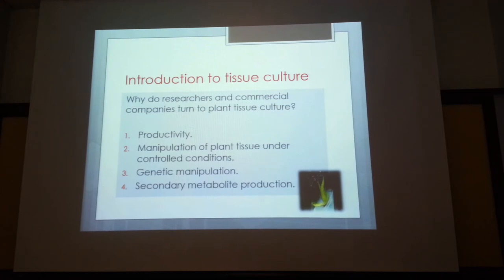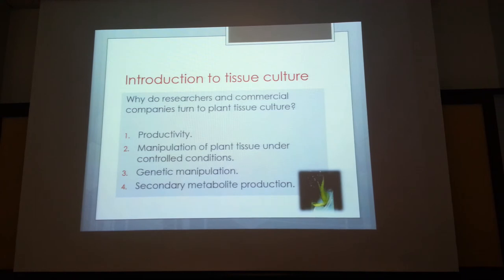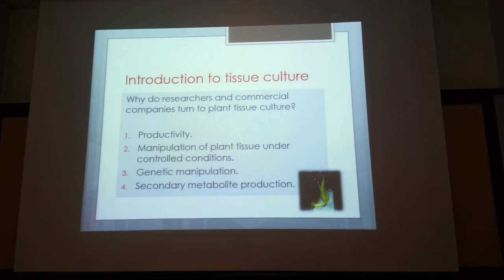For secondary metabolite production, a medicinal plant grown in the field requires a very large area and takes three to four years with a low yield. Instead, you can take the tissues or organs that produce the pharmaceutical compound and grow them in a bioreactor in the lab with media, achieving higher yield, greater purity, and a shorter culture duration.